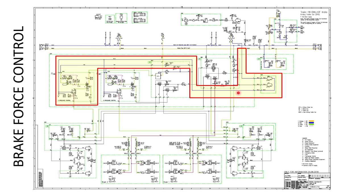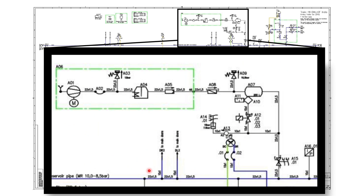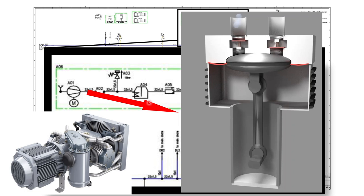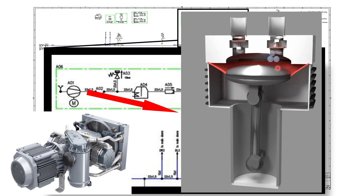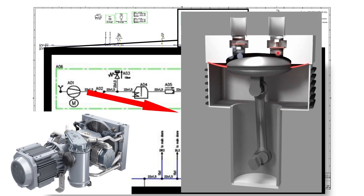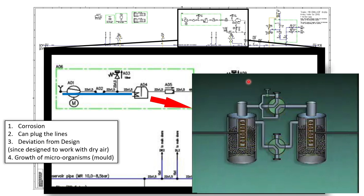The first stage is brake force generation. The very first step is the compressor, which takes in atmospheric air and pushes out compressed air. This is a piston compressor — it takes in atmospheric air, compresses it, and when it reaches a certain pressure a valve opens and the air passes to the outlet. So on the inlet there is atmospheric air, and on the outlet there is compressed air.